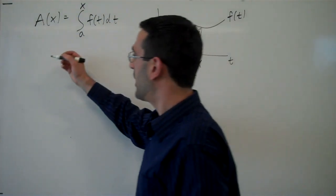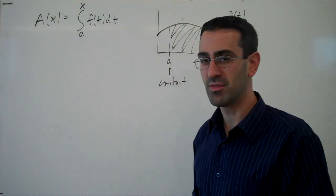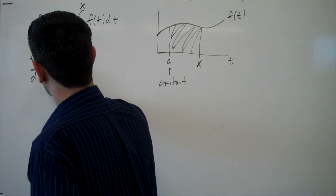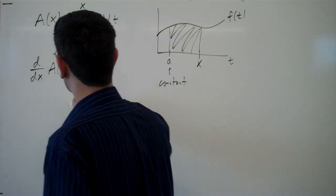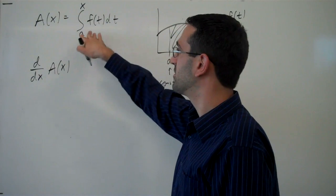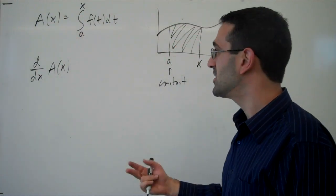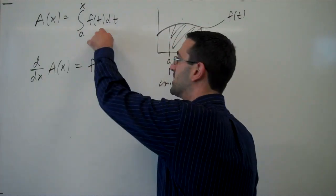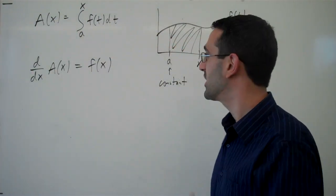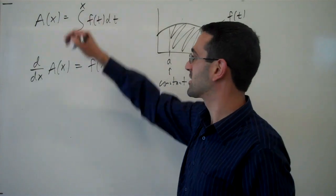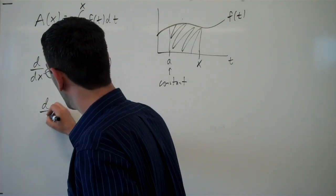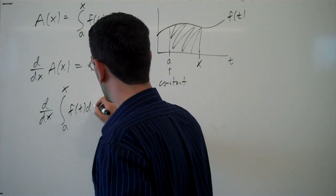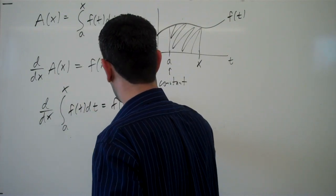So the question becomes, what happens if I take the derivative of this function? What happens if I find the derivative of A(x), in other words, the derivative of this integral? It turns out that what we end up with is f(x). We end up with the function that we started with at that x value. In other words, the derivative of the integral from a to x of f(t)dt is just f(x).